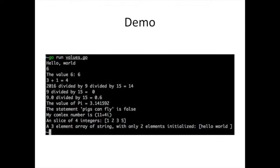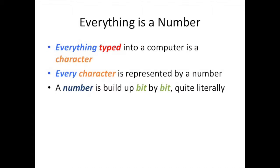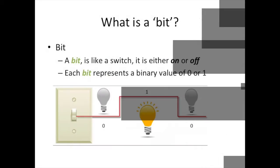Check out the code in GitHub — that's going to be in the description below — or just pause the video and go back and forth between the slides. One thing you may not realize, even though we seem to have printed out a bunch of different types of values — booleans, complex numbers, strings, and all these different things — is that in any computer, everything you type is a character. Every key you press is a character, and every character is represented by a number inside the computer. So all the computer is doing is manipulating numbers, and a number is built up by bits.